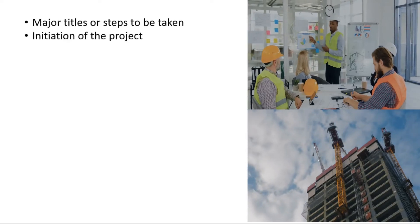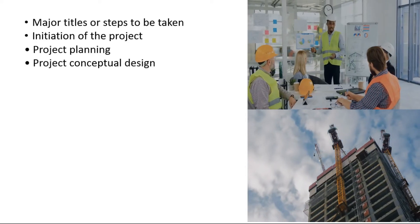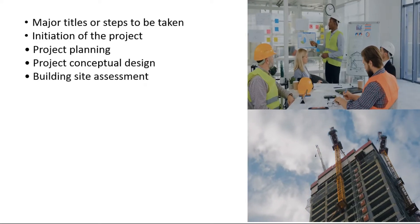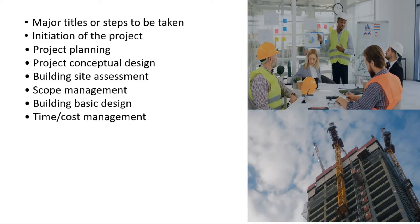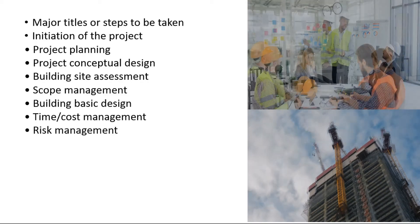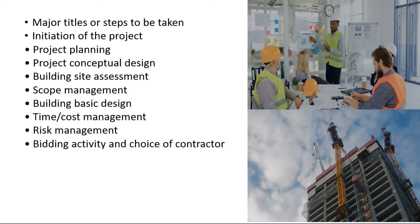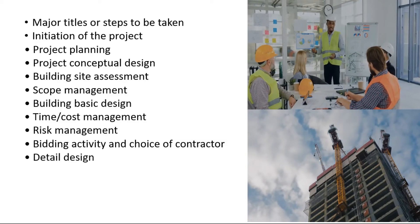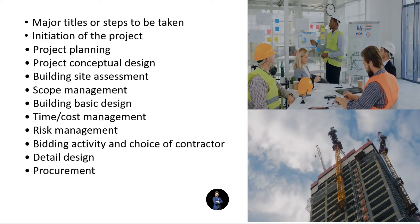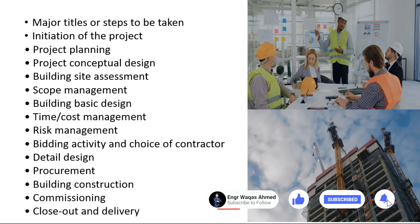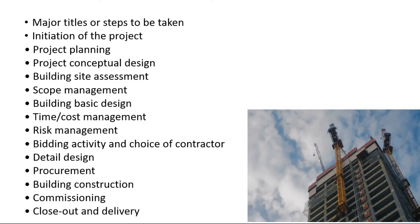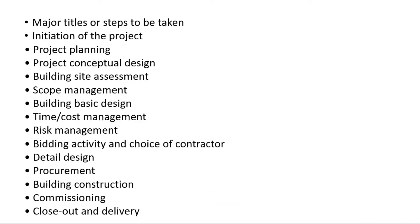The major steps to be taken are: Initiation of the Project, Project Planning, Project Conceptual Design, Building Site Assessment, Scope Management, Building Basic Design, Time and Cost Management, Risk Management, Bidding Activity and Choice of Contractor, Detail Design, Procurement, Building Construction, Commissioning, Closeout and Delivery. We are now going to have a step-by-step breakdown with details of each given WBS element.